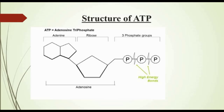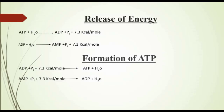ATP stands for adenosine triphosphate. When it contains only two phosphate groups, it is called adenosine diphosphate, or ADP. When it contains only one phosphate group, it is called adenosine monophosphate. When ATP loses one phosphate molecule, 7.3 kilocalories of energy is released. Similarly, when ADP loses another phosphate molecule, again 7.3 kilocalories of energy is released. When ADP is converted into ATP, 7.3 kilocalories of energy is required.